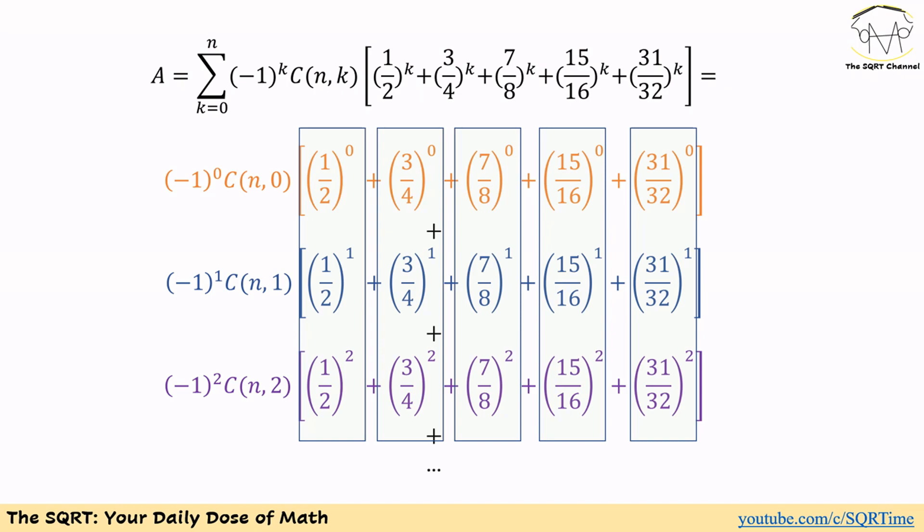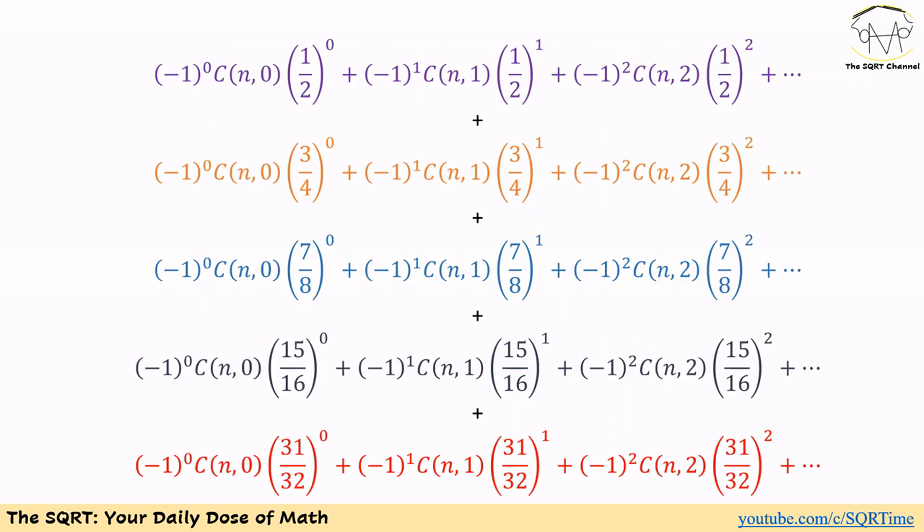We are going to rearrange the expression and group terms vertically — instead of keeping 1/2, 3/4, 7/8, and so on together, we consider all expressions for 1/2 first, then move to 3/4, and so on. Doing this, the expression in purple corresponds to 1/2, the expression in brown to 3/4, blue to 7/8, black to 15/16, and red to 31/32.